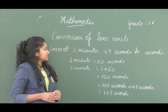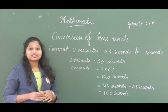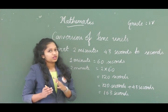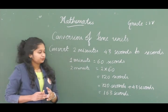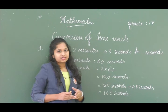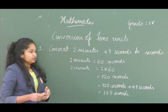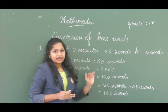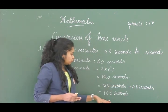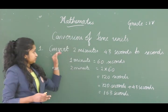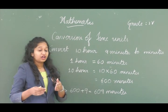Let's solve a question: convert 2 minutes 43 seconds to seconds. We know one minute equals 60 seconds, so two minutes equals 2 × 60 = 120 seconds. Now we add 120 seconds and 43 seconds to get 163 seconds. Therefore, 2 minutes 43 seconds equals 163 seconds.